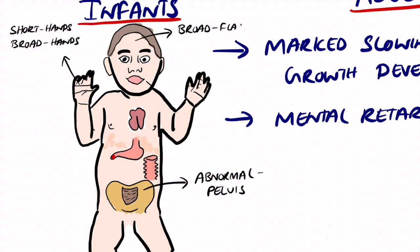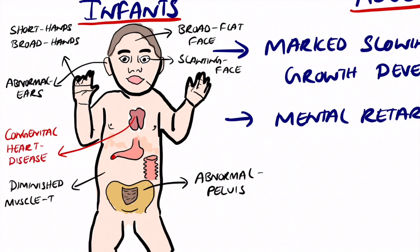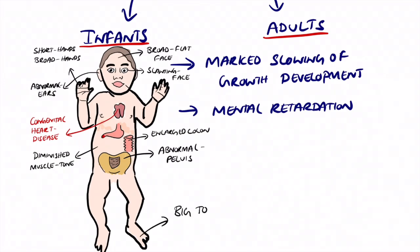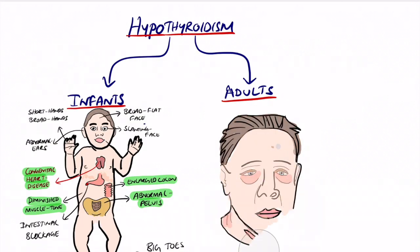Infants with hypothyroidism may also have a broad flat face, slanting face, abnormal ears, fine coarse hair, congenital heart disease, diminished muscle tone, enlarged colon, wide toes, and intestinal blockages leading to stenosis or pyloric stenosis. The main ones to remember are growth retardation, mental retardation, and diminished muscle tone.